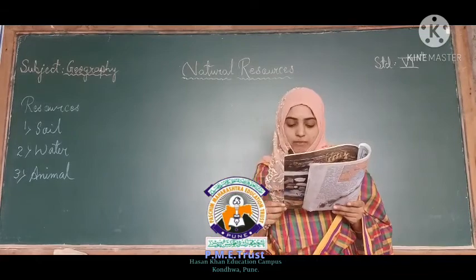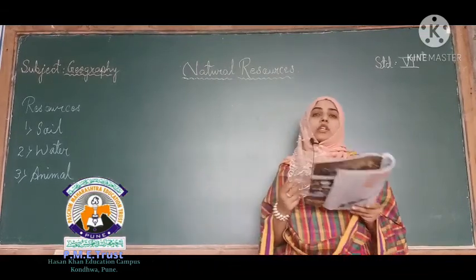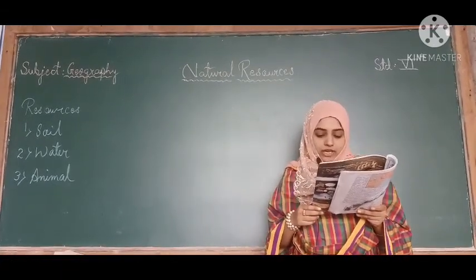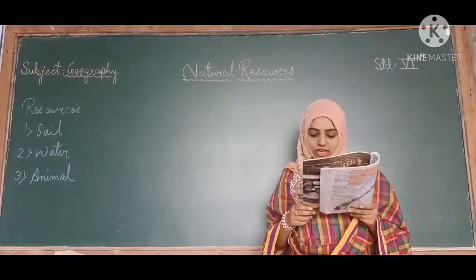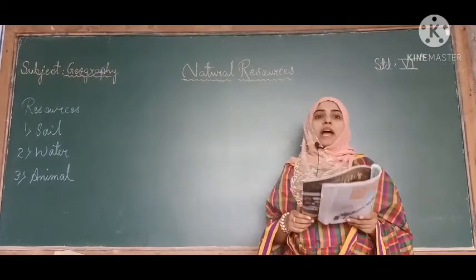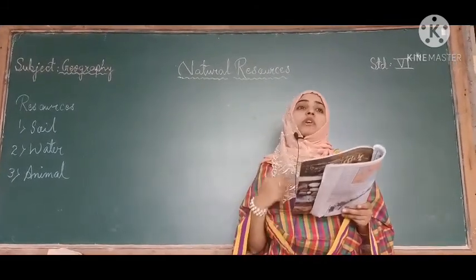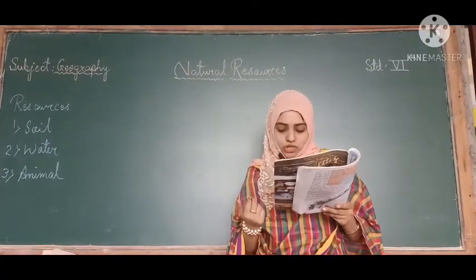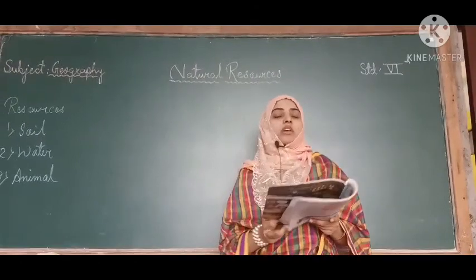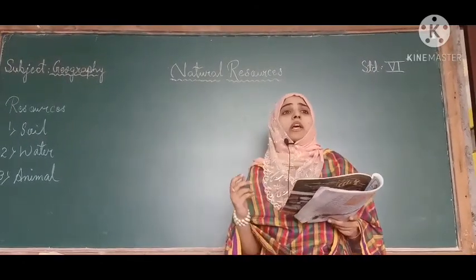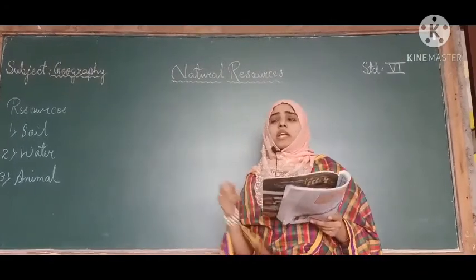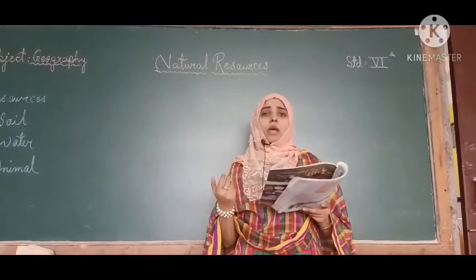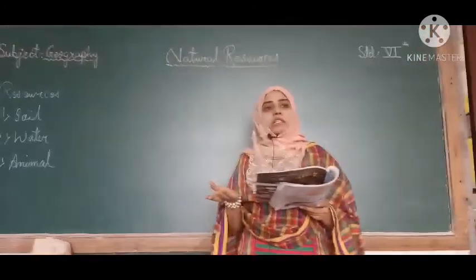Man, by himself, with the help of his intellectual power, started using resources. Later, the increase in population and the greed of humans led to exploitative use of resources. Due to the high population and high demand, they are exploiting the use of resources. These actions began to upset the balance in nature — population is increasing day by day and natural resources get disturbed and wasted.